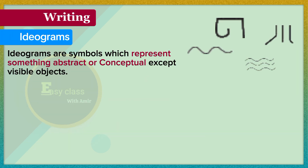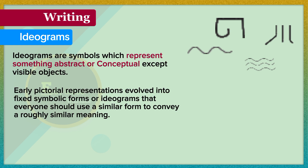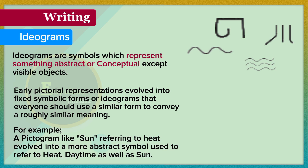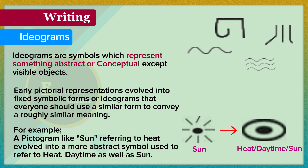Ideograms. Ideograms are symbols which represent something abstract or conceptual, beyond visible objects. Early pictorial representations evolved into fixed symbolic forms, or ideograms, that everyone should use in a similar form to convey a roughly similar meaning. For example, a pictogram like sun, referring to heat, evolved into a more abstract symbol used to refer to heat, daytime, as well as sun.